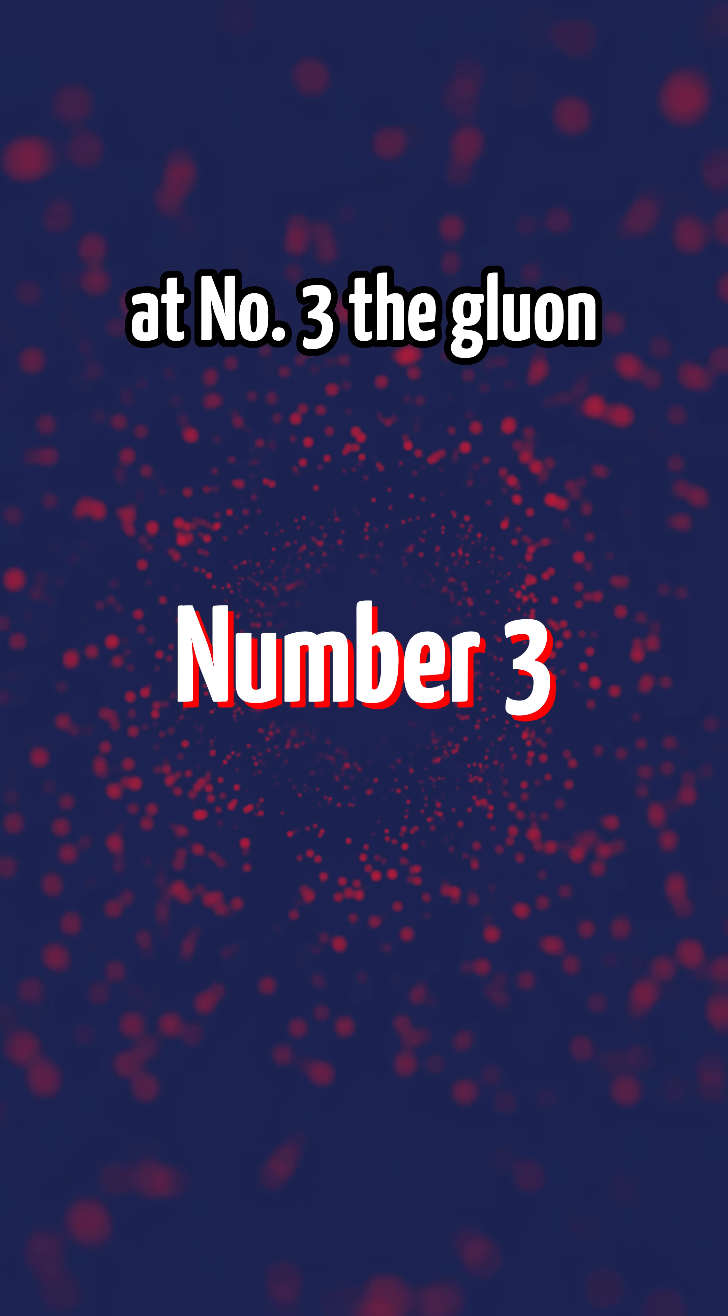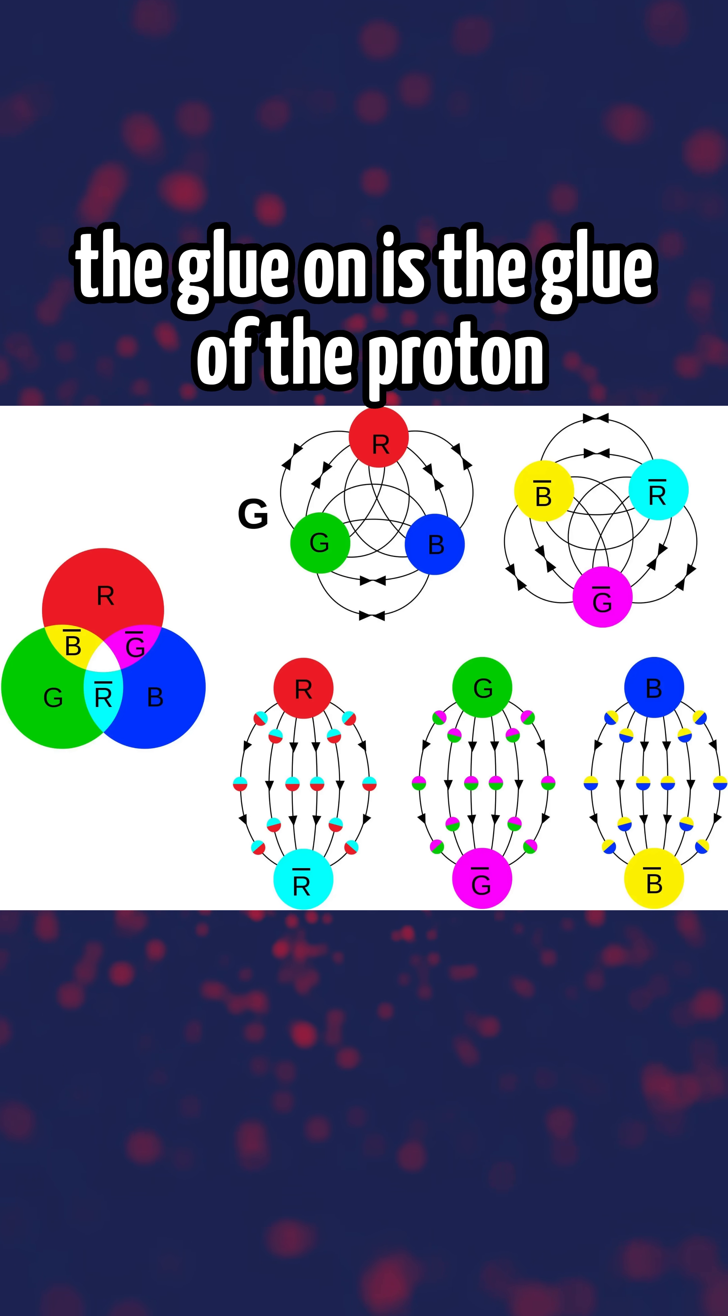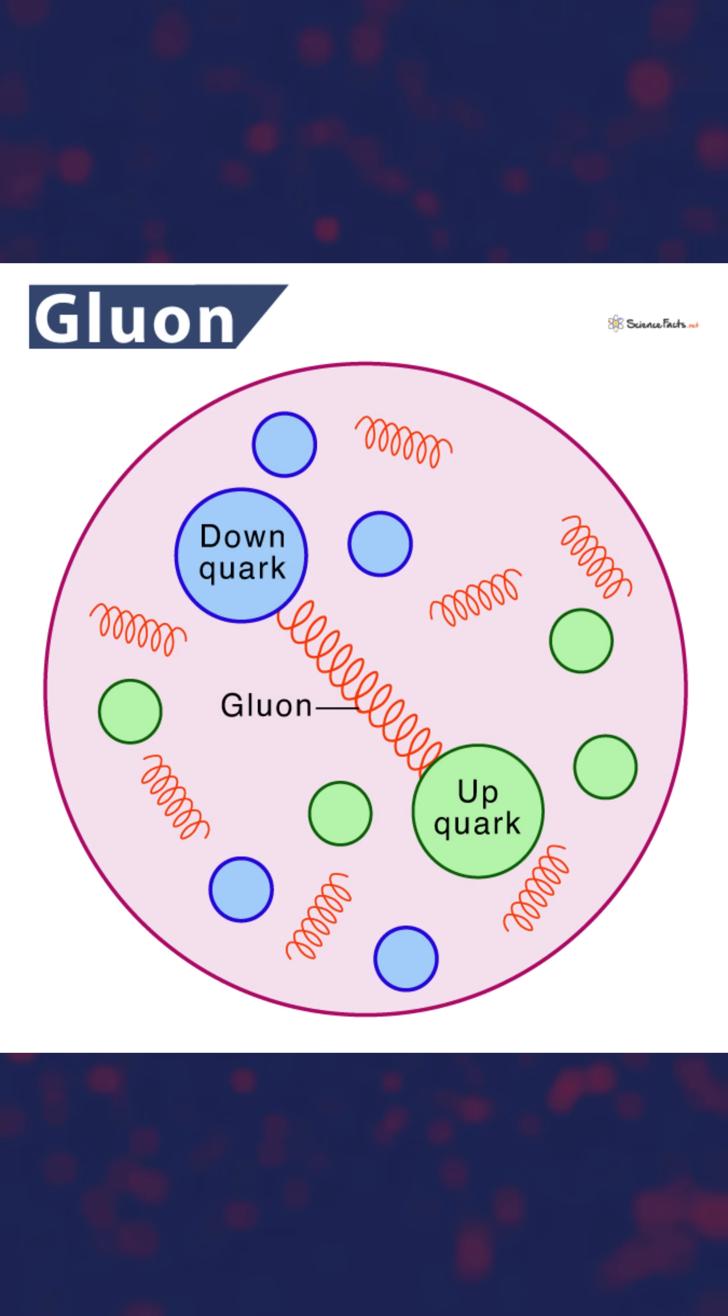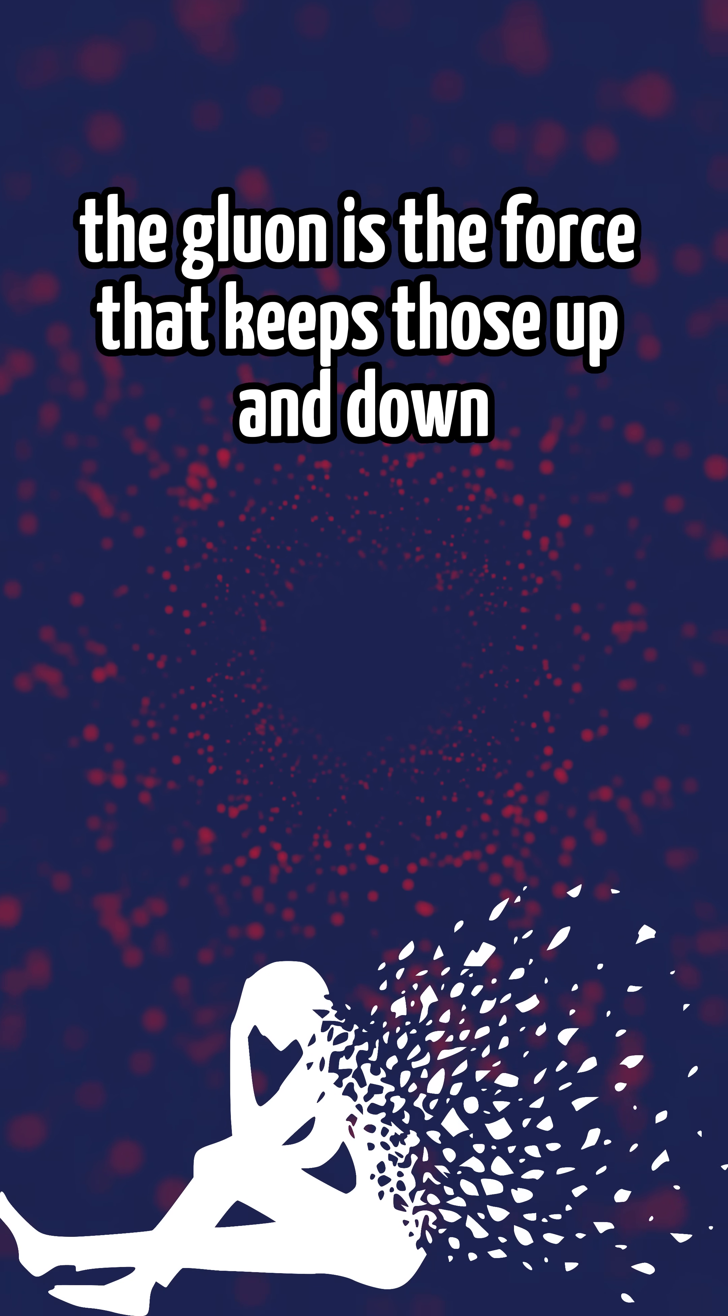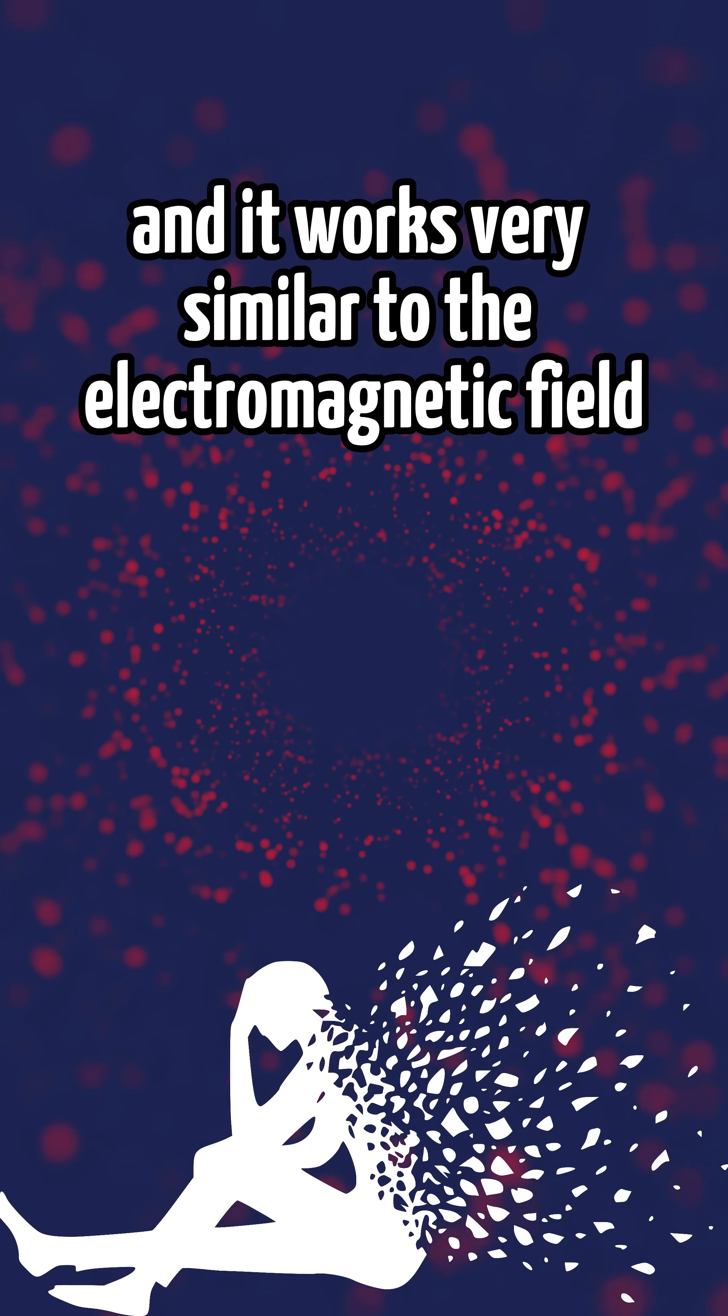At number three, the gluon. The gluon is the glue of the proton. All right, you see now the gluon is the force that keeps those up and down quarks in the proton stick together.